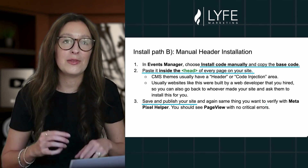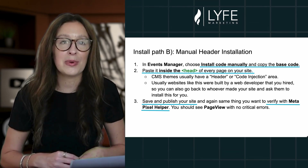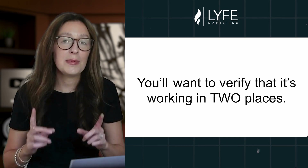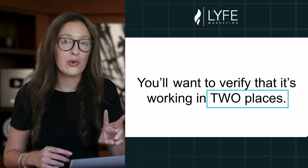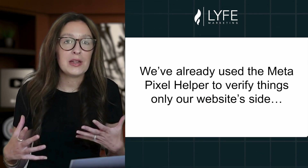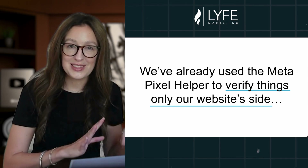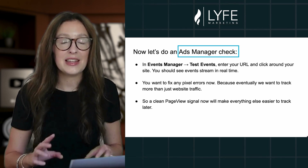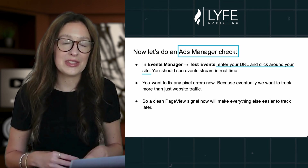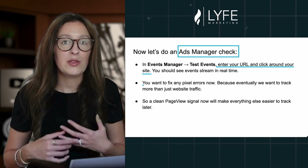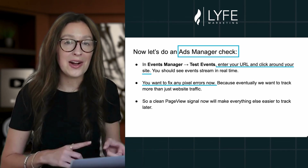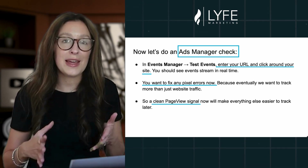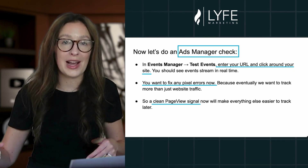Now you'll typically want to verify that it's working in two places before moving on. We've already used the Meta Pixel Helper to verify it's working on your website's side. Now let's do an Ads Manager check. In Events Manager, go to Test Events, enter your URL and click around your site — you should see events stream in real time. You want to fix any pixel errors now, because eventually we want to track more than just general website traffic. A clean page view signal now will make everything else easier to track afterwards.